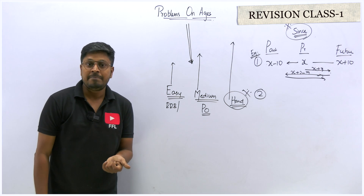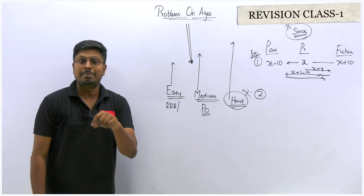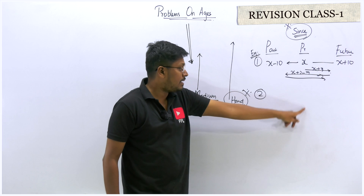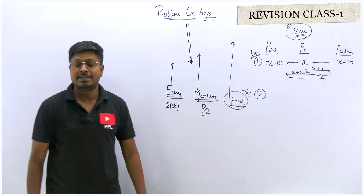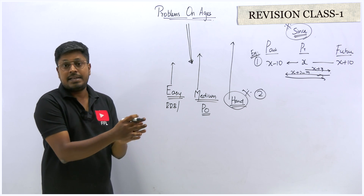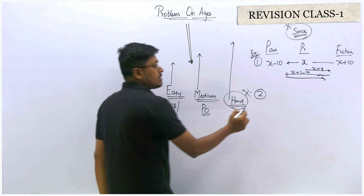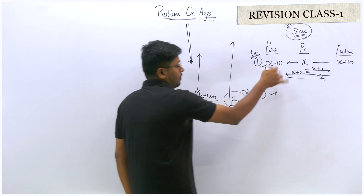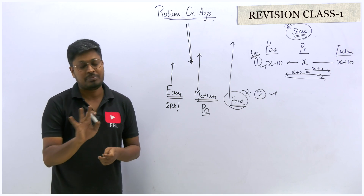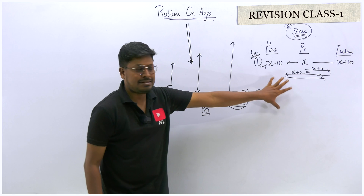From that point, what will be my age seven years back? It will be x + 3 − 7. First write it in terms of numbers, then keep the present age as x and solve all the similar data. This way you can understand how to proceed when you know the present age and when you don't. If you write these two correctly, 80% of the concept of Problems on Ages is covered.